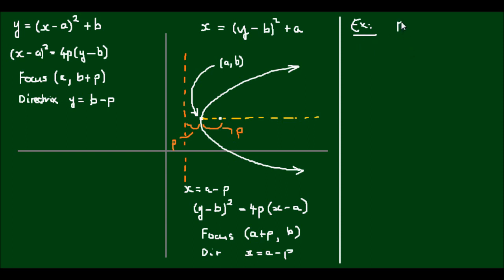Given that a focus point is (3, 0), and the directrix is x equals -3, let's find an equation that satisfies this condition. So the focus given by (a + p, b) is equal to (3, 0).